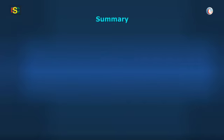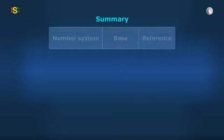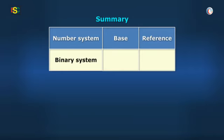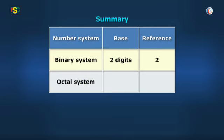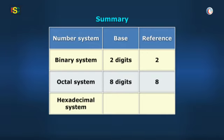Let's summarize all the conversions with a generalized pattern. The binary number is based on 2 digits, so the reference digit is 2. Octal number is based on 8 digits, so the reference digit is 8. Hexadecimal number is based on 16 digits, so the reference digit is 16.